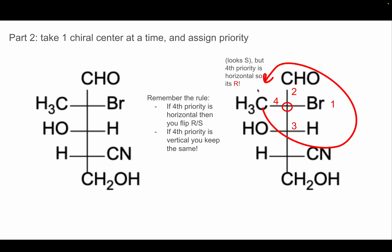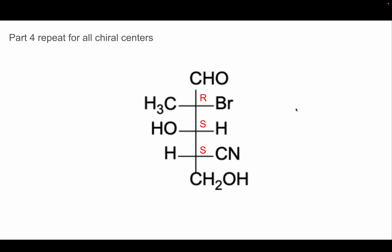So hopefully that was thorough and you understand that. If we do the same for all the rest of the chiral centers, we get R for this one, and S and S for the other two. I hope that helped you guys — I really enjoyed going through this problem and working it out. Anyway, have a good one!